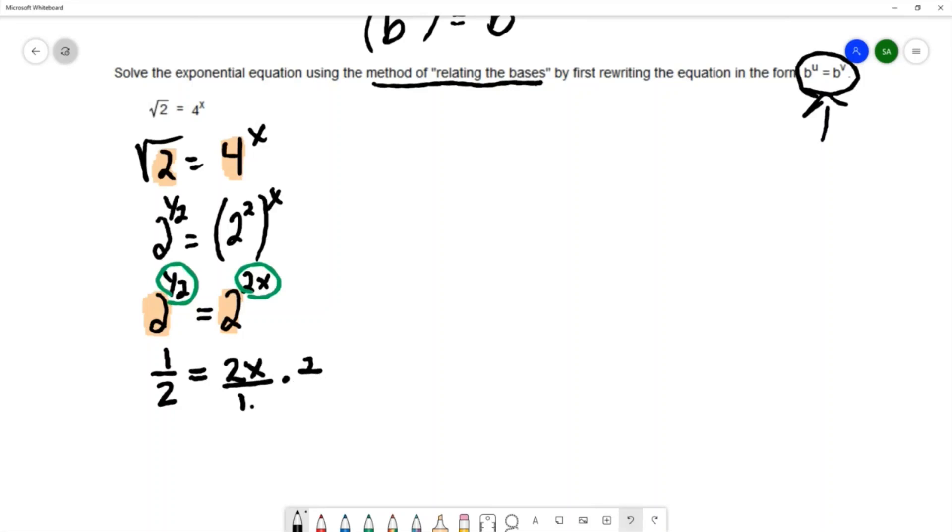And now that I have a simpler equation, I can solve for x. And I'll multiply by the reciprocal. The reciprocal of 2 over 1 is 1 over 2. So on the left I get 1/4 and on the right I get those 2's canceling and I get x equals 1/4.